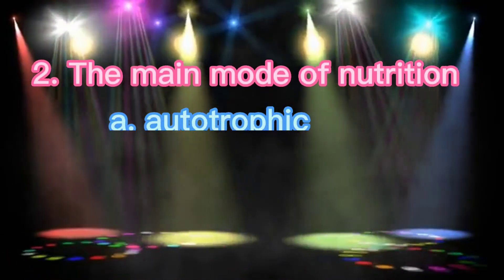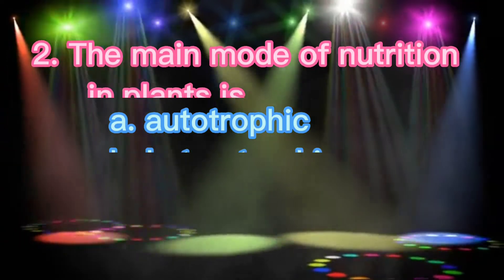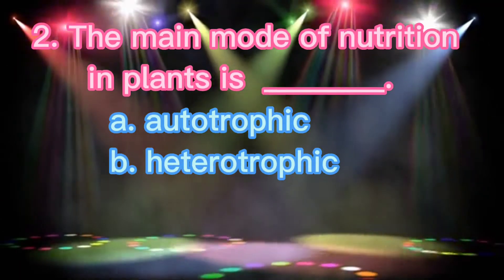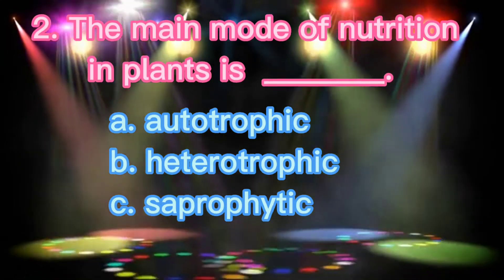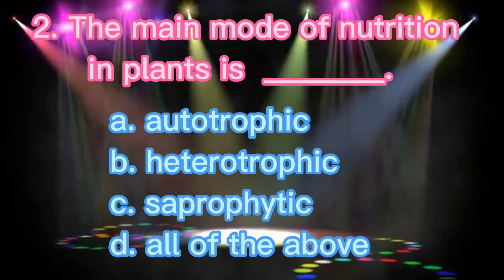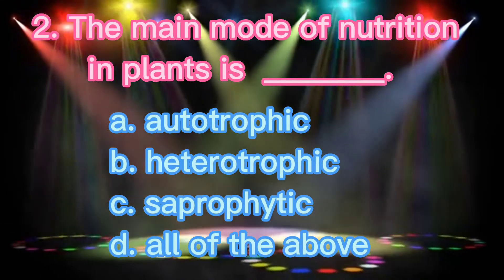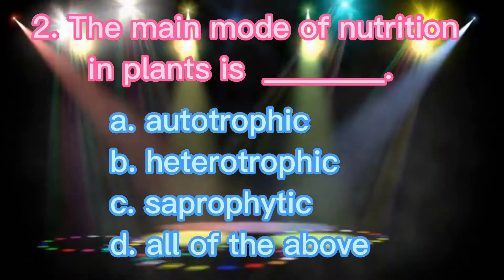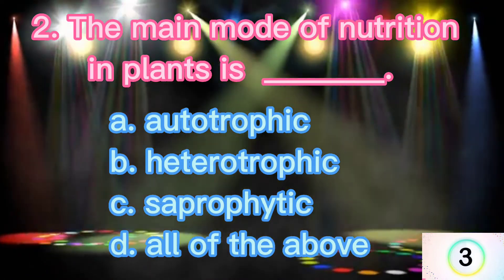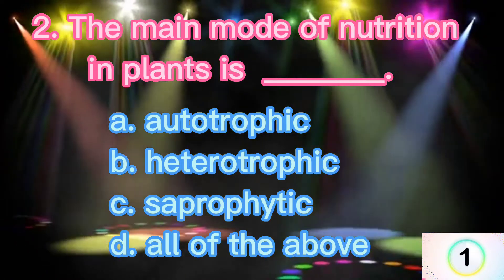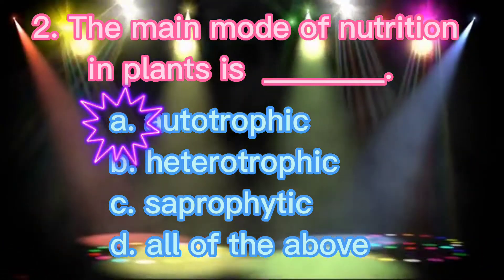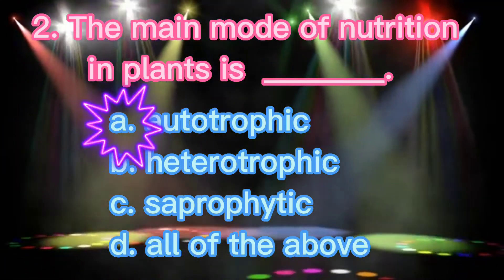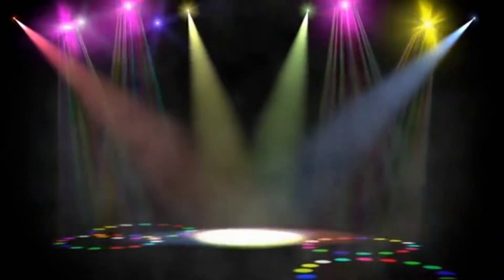Number 2. The main mode of nutrition in plants is blank. Letter A: Autotrophic. Letter B: Heterotrophic. Letter C: Saprotrophic. Letter D: All of the above. The correct answer is Letter A: Autotrophic.